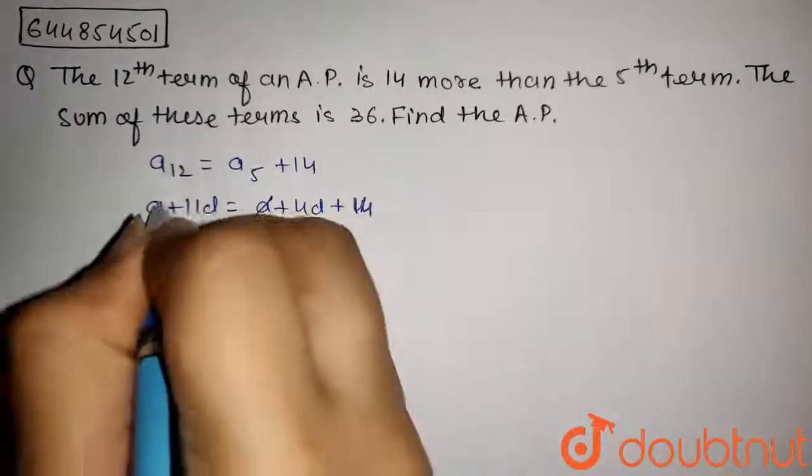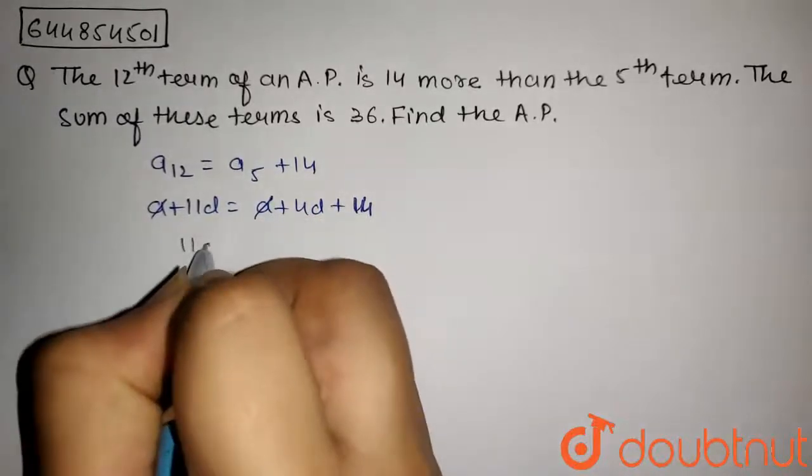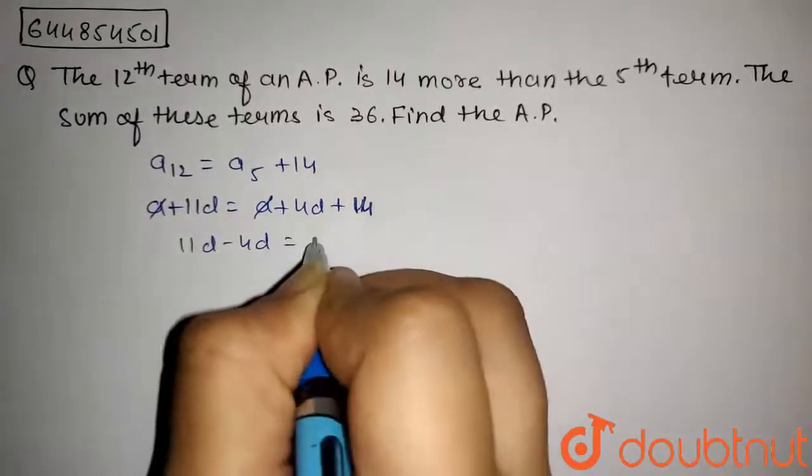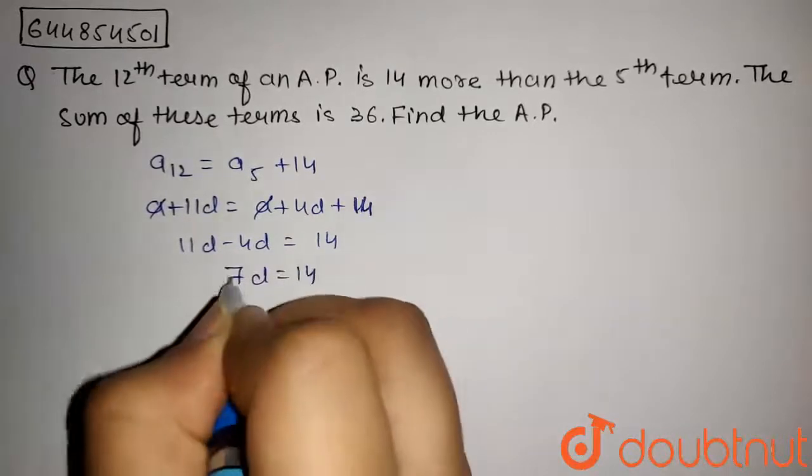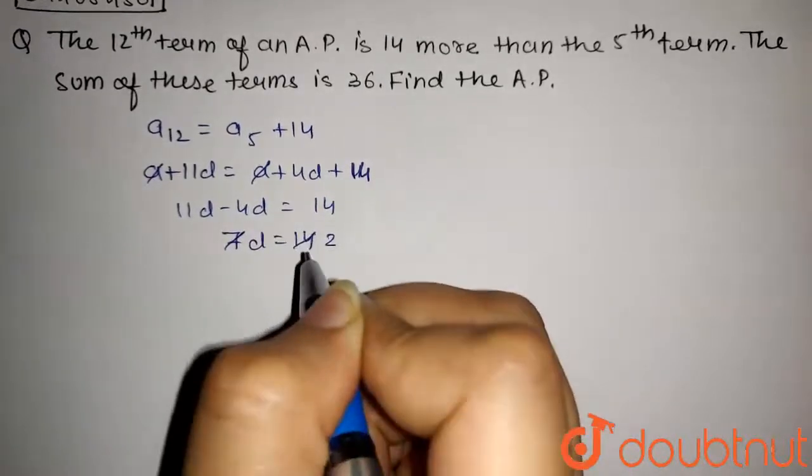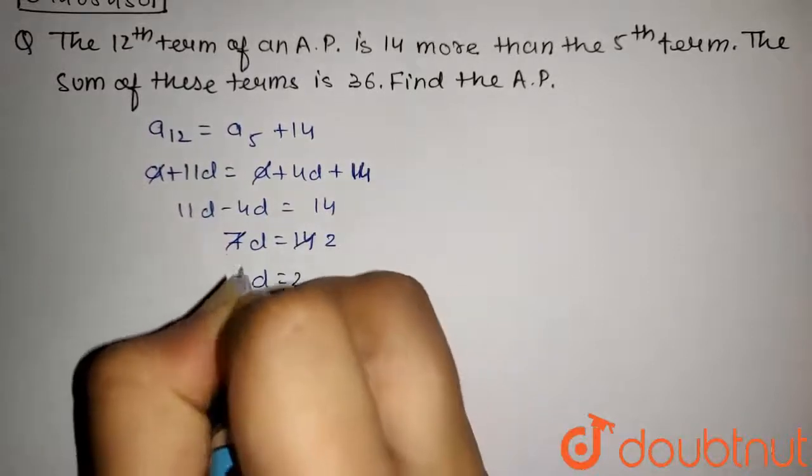Now, this A and A will get cancelled. We get 11D minus 4D equals 14, or this will be 7D equals 14. This will be cancelled two times. So we get D equals 2.